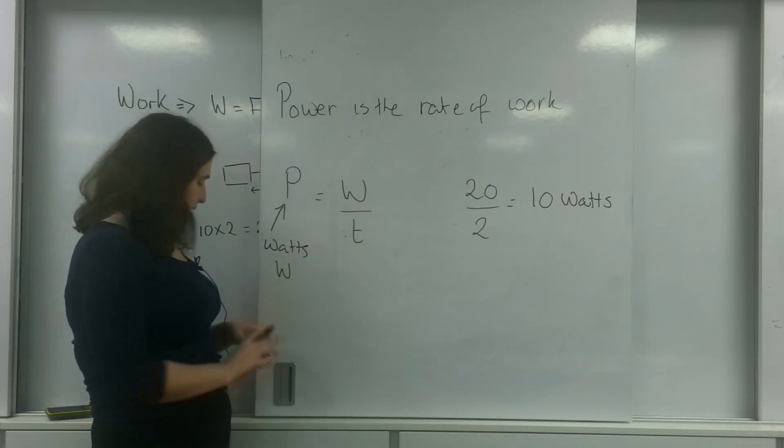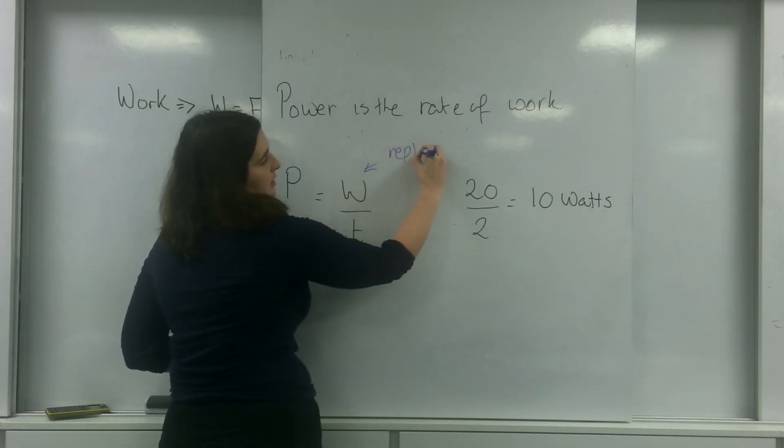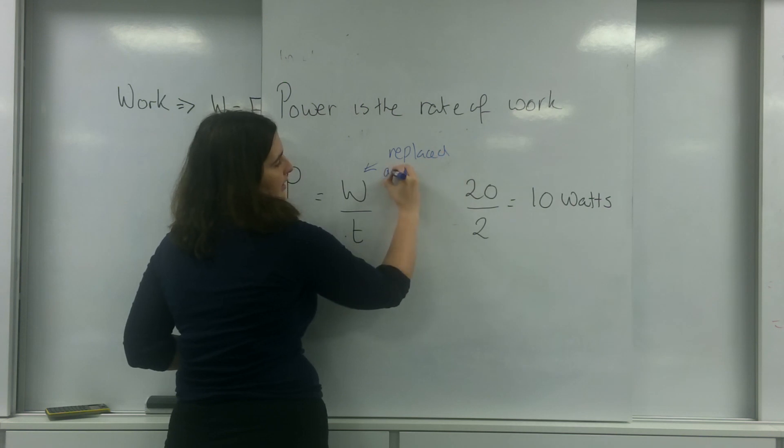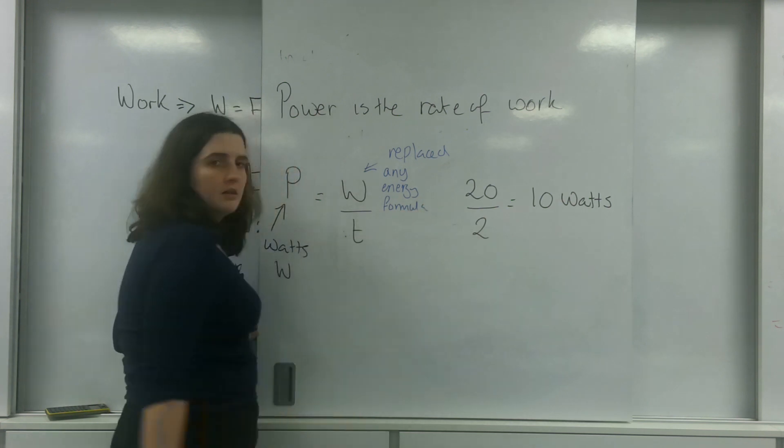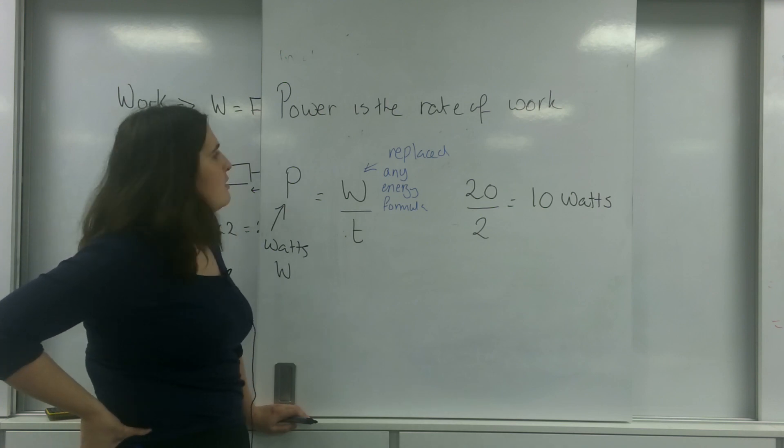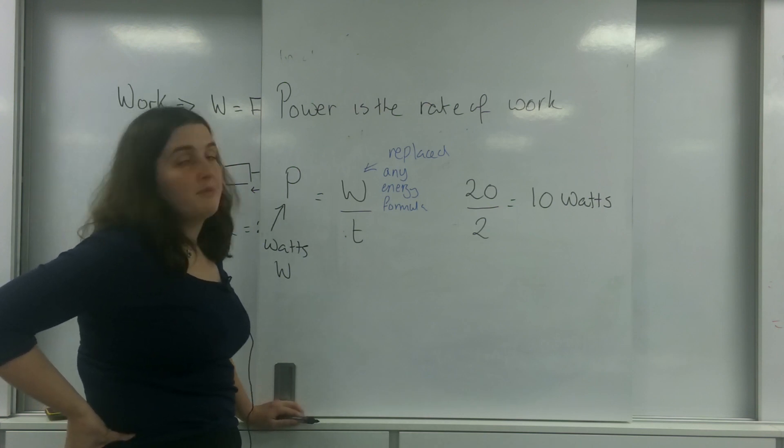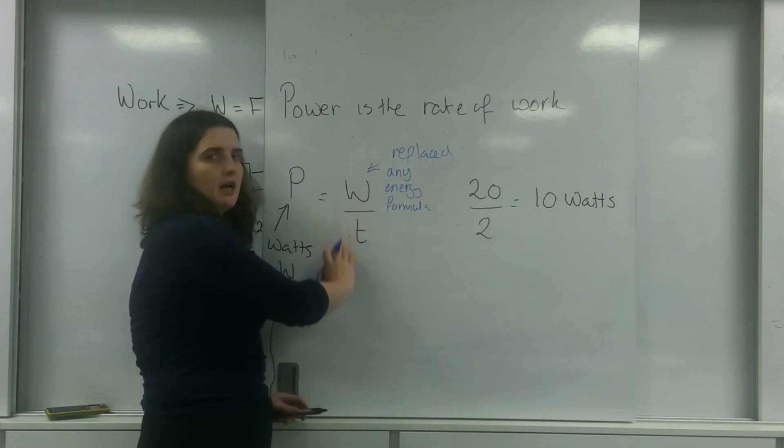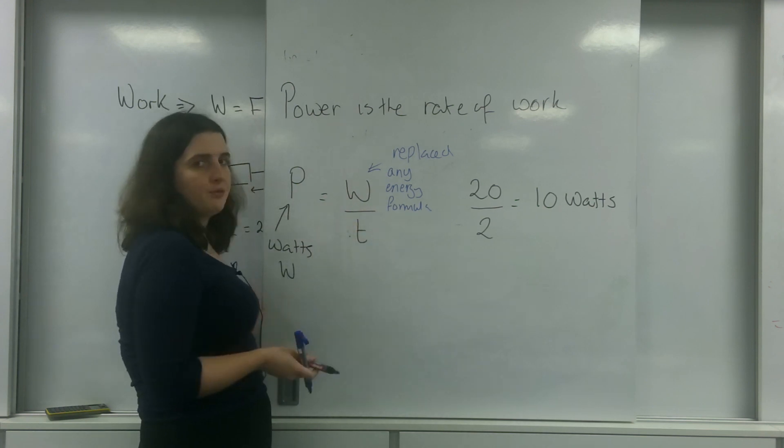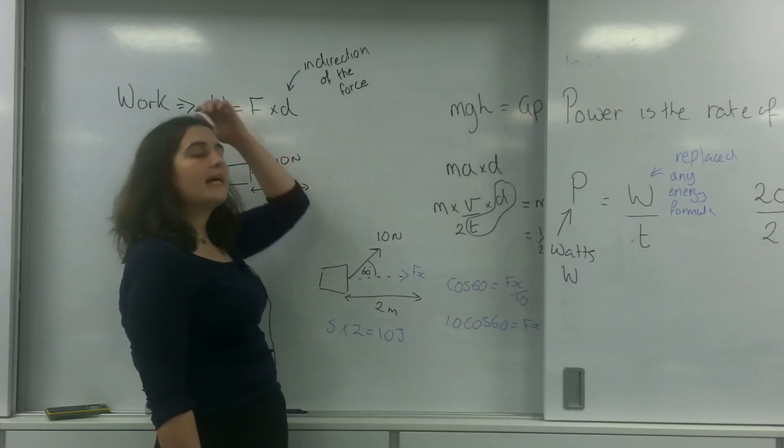Now this formula here, this work done, can be replaced by any energy formula. So you can use mc delta t for specific heat capacity, you could use ml, you could use mgh, you could use half mv squared. This energy, this work done, can be replaced for any energy formula. And this is because all energy formulas come from this formula here, work done.